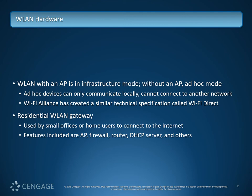Residential wireless LAN gateways are used by small offices or home users to connect to the net — you may think of this as a SOHO router. These could include APs, firewalls, routers, DHCP servers, and other functions.